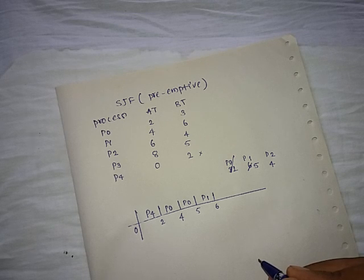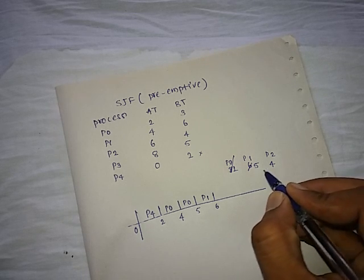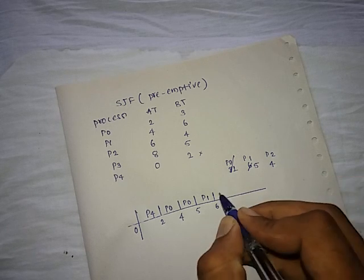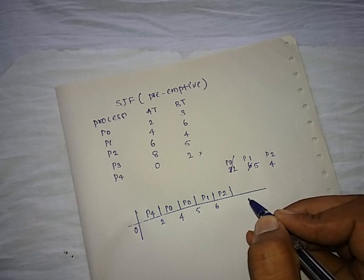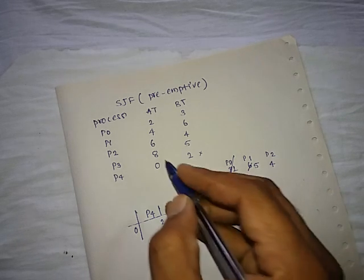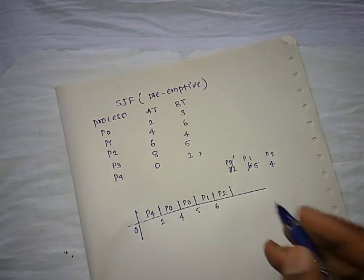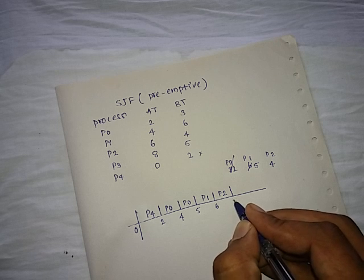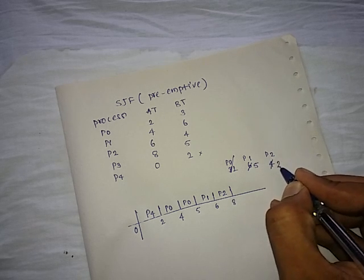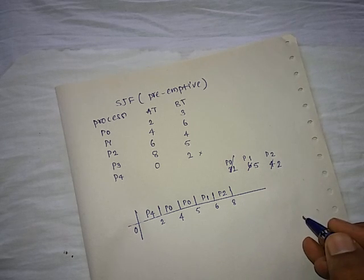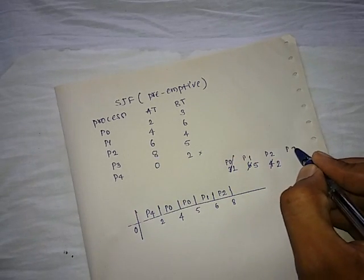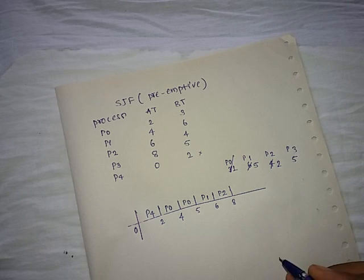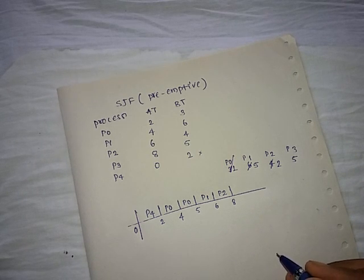We check which process has the shortest job among those in the system. That is P2. We execute P2 up to the next arrival time, which is at time eight — so P2 runs for two units, from six to eight, leaving a remaining burst time of two. At time eight, another job P3 arrives with burst time five.